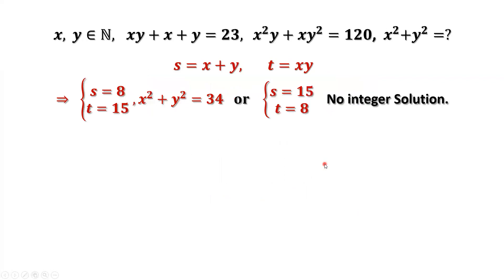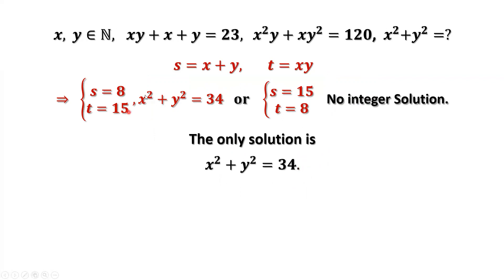We have done both situations. This is the conclusion: the only solution is the first one. x squared plus y squared equals 34. That's all. Thanks for watching and see you next time.